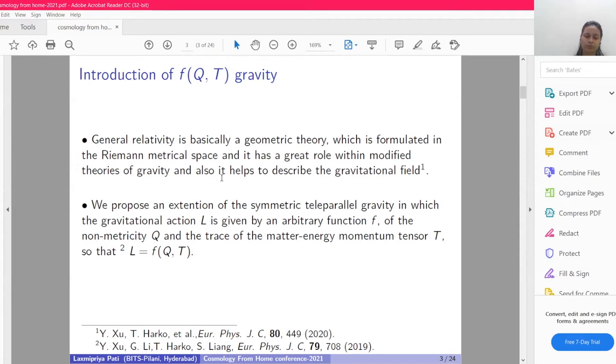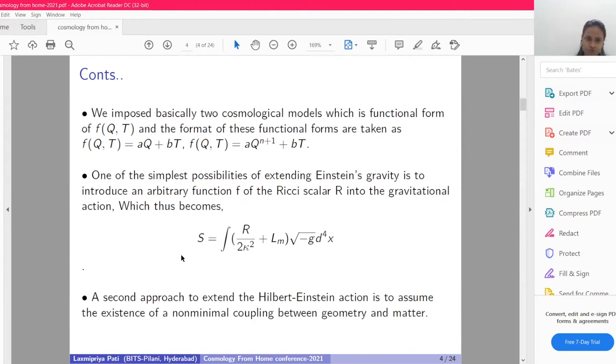Here we propose an extension of the symmetric teleparallel gravity in which the gravitational action L is an arbitrary function of the non-metricity Q and the trace of the energy momentum tensor. Mathematically, you can represent as L equals f(Q,T). One of the simplest possibilities of extending Einstein's gravity is to introduce an arbitrary function F of the Ricci scalar R into the gravitational action.